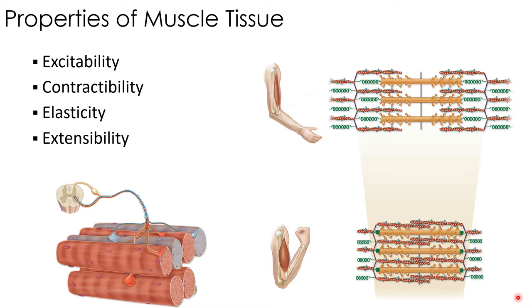There's contractability: the ability for contractile proteins to slide past each other, causing a muscle to shorten and exert a pull or tension on whatever structure the muscle is attached to. Elasticity is the ability to return to its original form after a muscle is either stretched or shortened during a contraction — just as if you stretched a piece of elastic and let go. And then extensibility: the lengthening of a muscle cell that occurs when the muscle is stretched and isn't contracting.